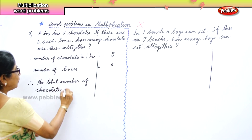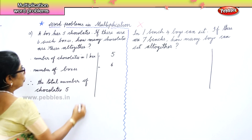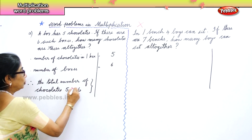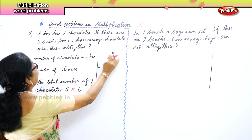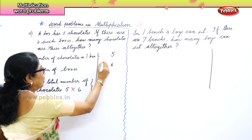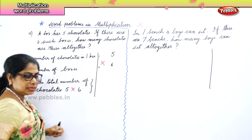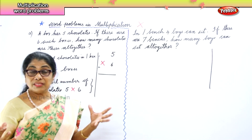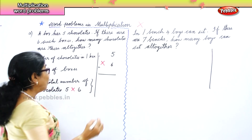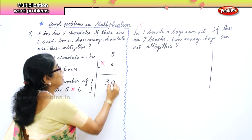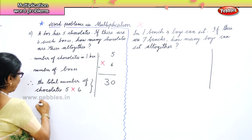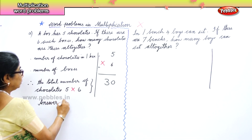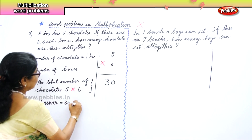How do you find it? Five into six. So you are going to multiply: there are five chocolates in one box, that into six boxes. One box has five, so six boxes — six fives are thirty. What is the answer? There are thirty chocolates altogether. Your answer is: thirty chocolates altogether.